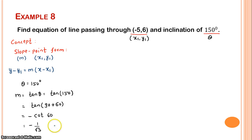Step by step, we are going to solve this problem. We use y - y₁ = m(x - x₁). Substituting values: y - 6 = (-1/√3)(x - (-5)). This becomes y - 6 = (-1/√3)(x + 5). Cross multiplying with √3: √3(y - 6) = -(x + 5).